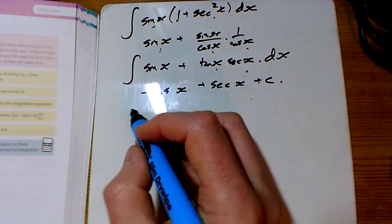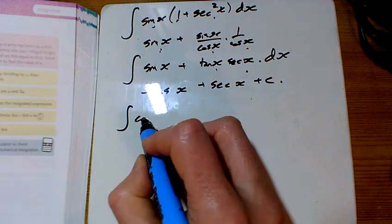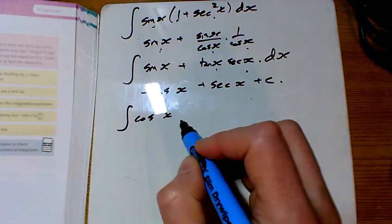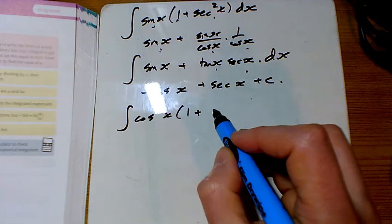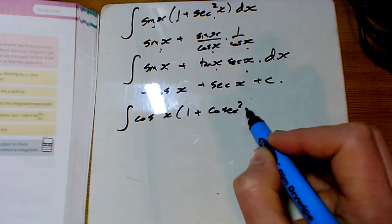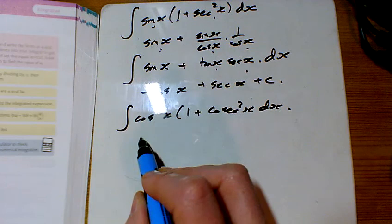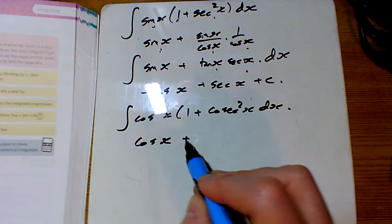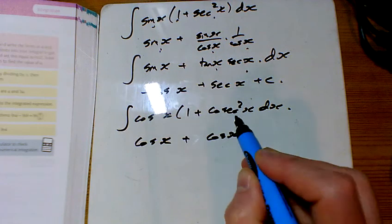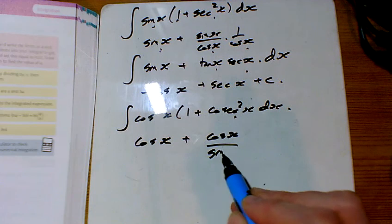And for f, I think I'm doing virtually the same thing. I'm just going to multiply this out again so I've got cos x times by 1 plus cosec squared x. So I've got a cos x and then I've got a cos x and the cosec squared is a sine on the bottom twice.